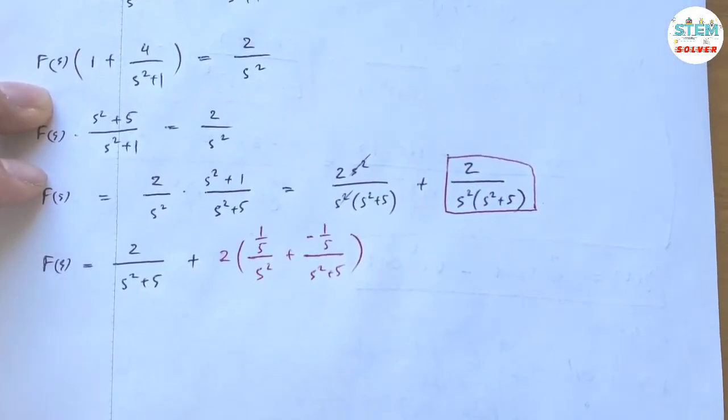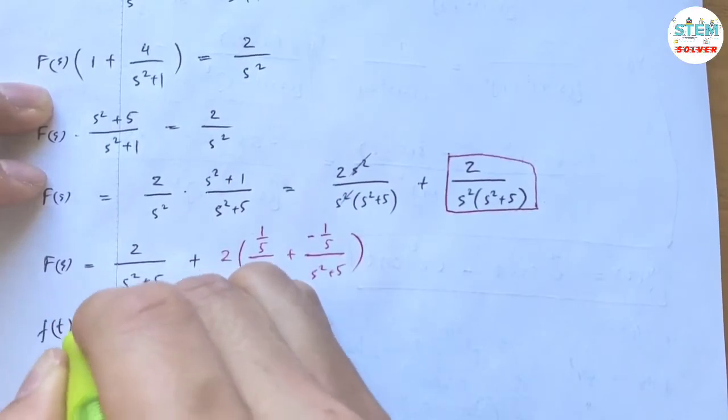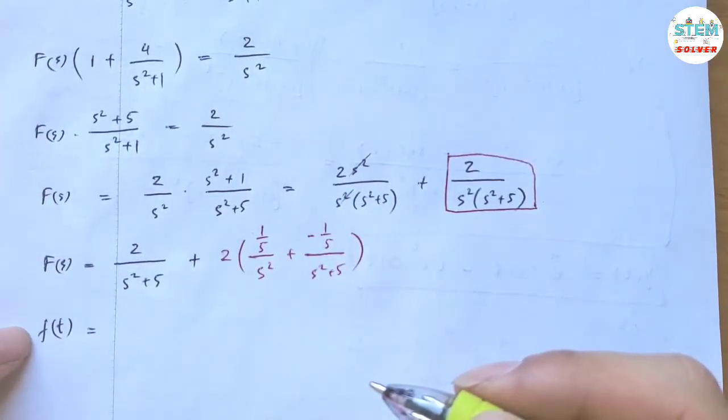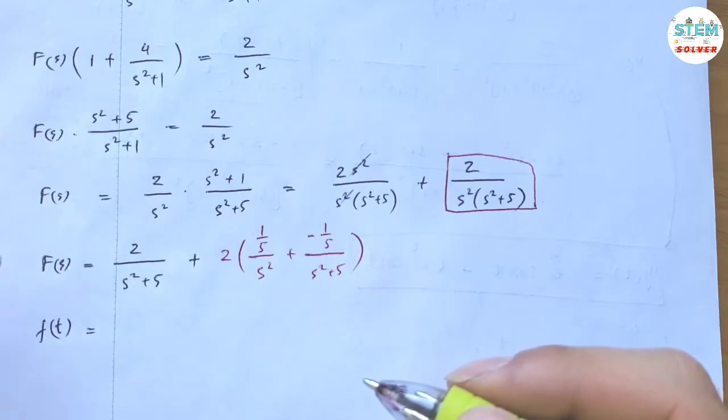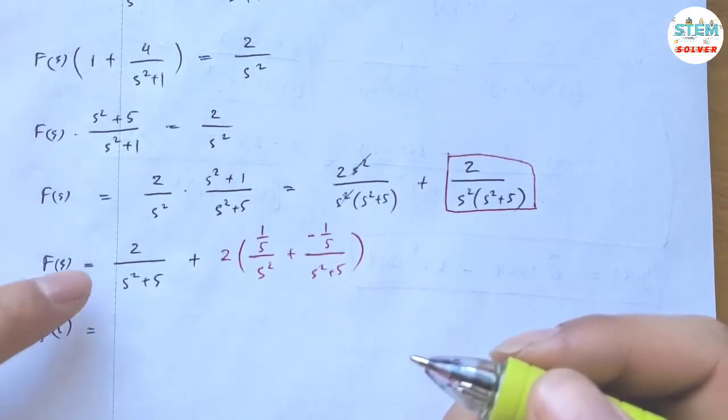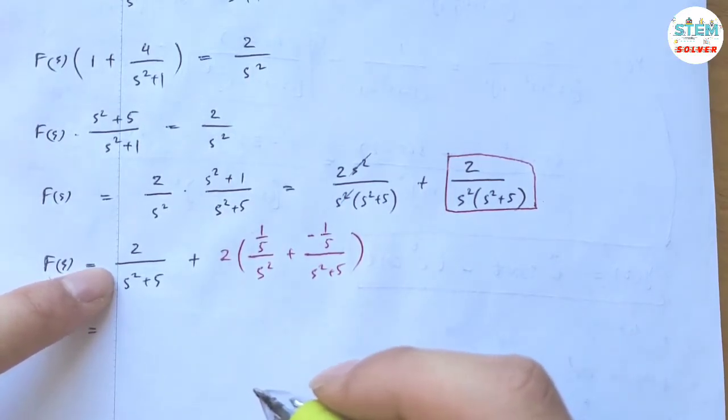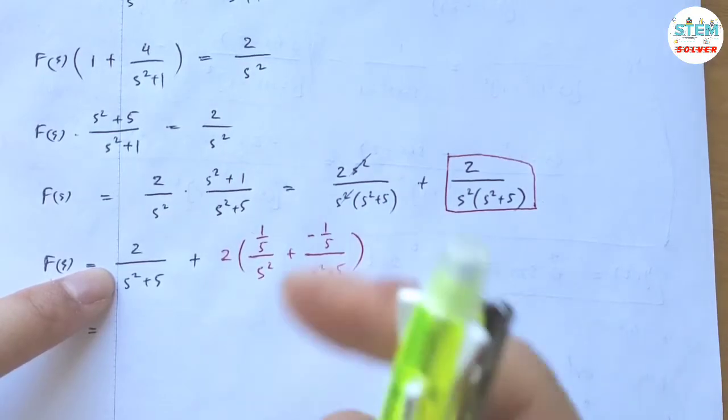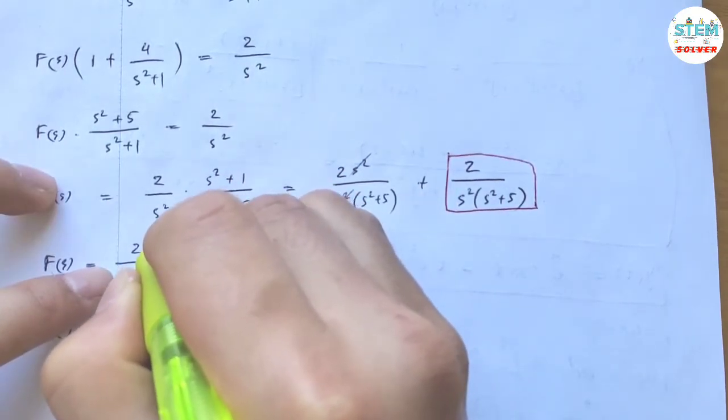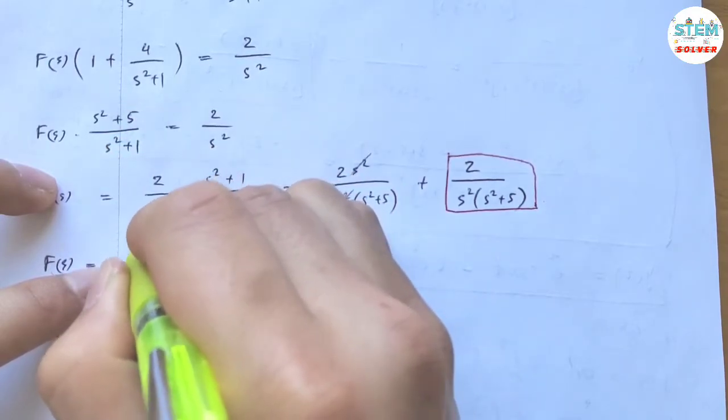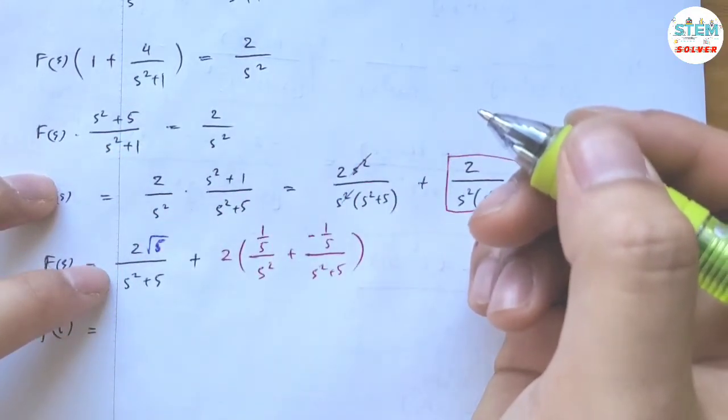Now it's ready to find f(t). So we're going to go back to the f world. The inverse transform of this one, the inverse transform of this one almost looks like a sine curve, unless we have square root of 5 on top.